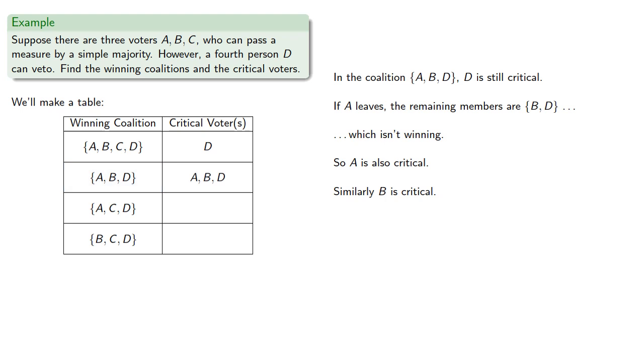And we can make a similar argument for the coalition A, C, D, and B, C, D, which gives us the critical voters.